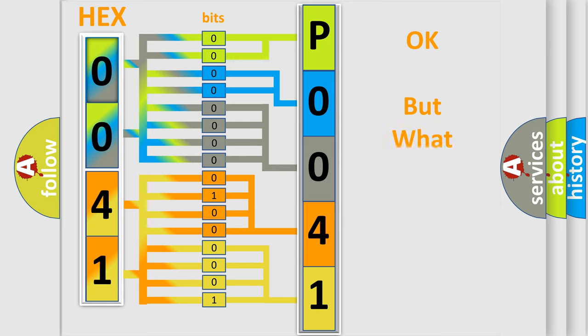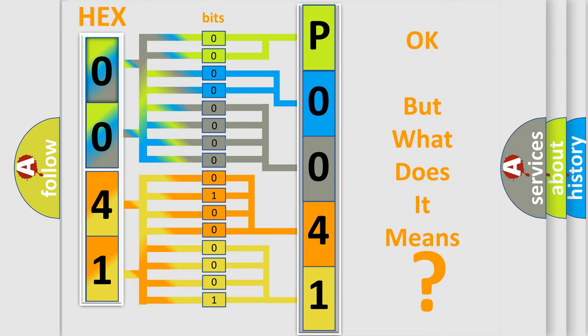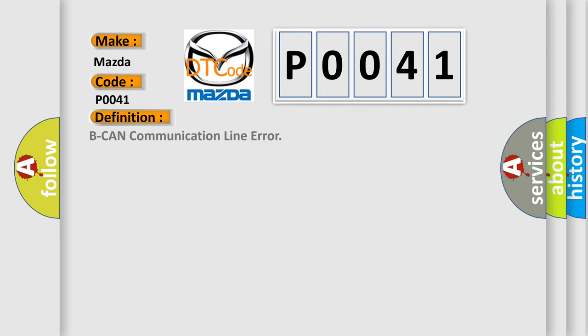The number itself does not make sense to us if we cannot assign information about what it actually expresses. So, what does the diagnostic trouble code P0041 interpret specifically for Mazda car manufacturers? The basic definition is: Beacon communication line error.